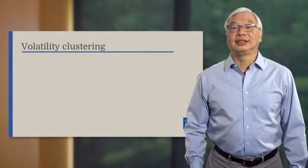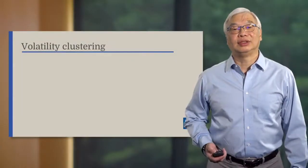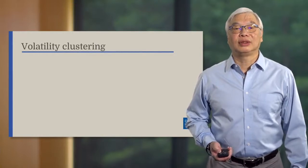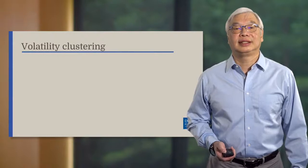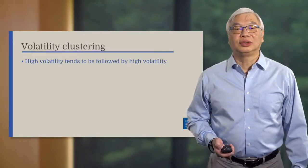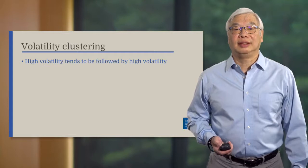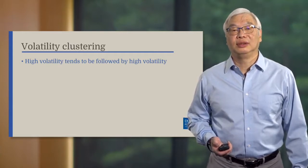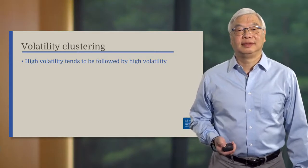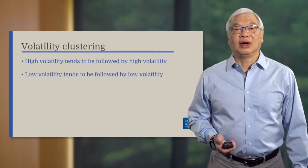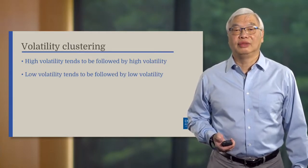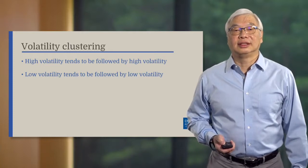Now we come to the second test to see if the ordering of our data is important. In this test, we are looking for volatility clustering. Researchers have observed that in many financial markets, high volatility days tend to be followed by more high volatility days. They also see that low volatility days tend to be followed by low volatility days. This is the phenomenon of volatility clustering.